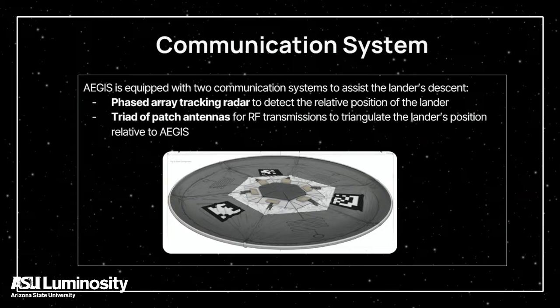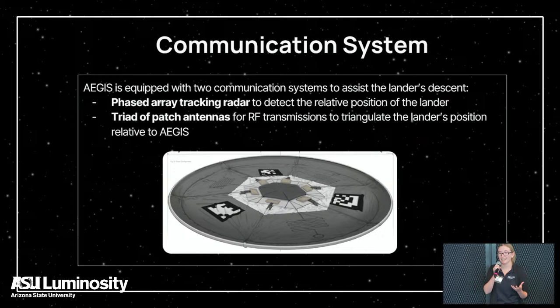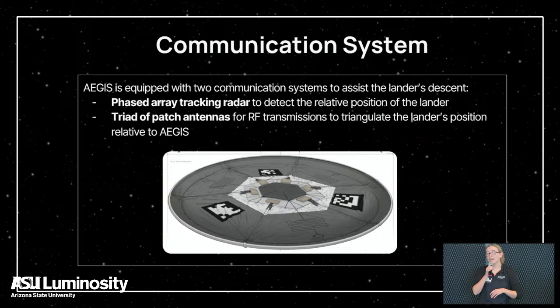While the NASA project isn't focusing on communication systems, we still wanted to explore how the lander communicates with the landing pad to know exactly where to land. We're exploring using a phased array tracking radar to detect the relative position of the lander as it approaches the Moon, and then using a triad of patch antennas to triangulate the lander's position and direct it to where to land on the landing pad.